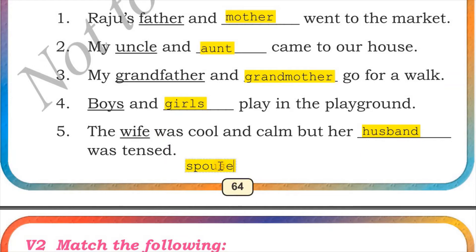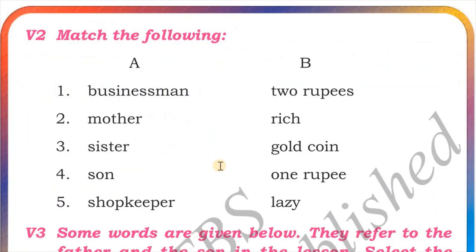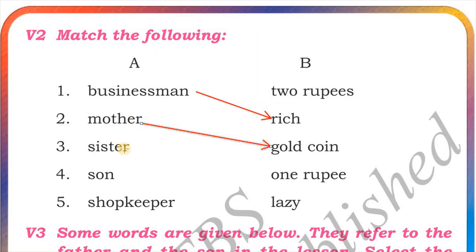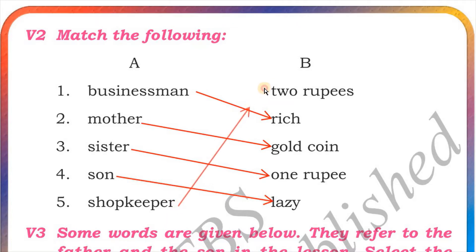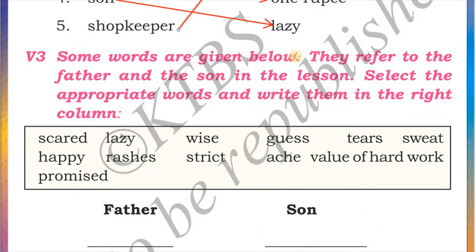Next we have V2: match the following. The businessman was rich (not lazy). The mother gave the boy a gold coin. The sister gave the boy one rupee. The son was lazy. The shopkeeper gave the boy two rupees because he offered: 'If you carry my bag, I will give you two rupees.'